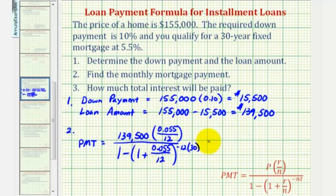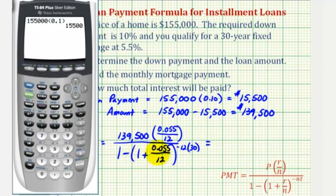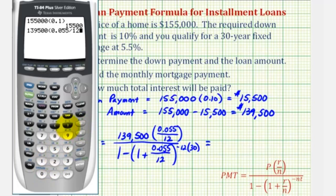And now we'll go to the calculator. Let's evaluate the numerator and denominator separately first. So for the numerator, we'll have 139,500 times 0.055 divided by 12. So the numerator is 639.375.